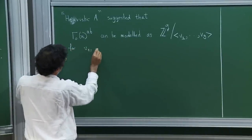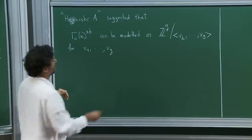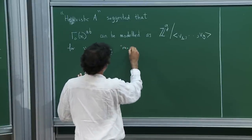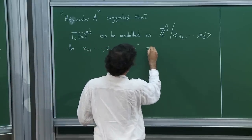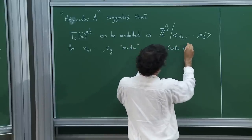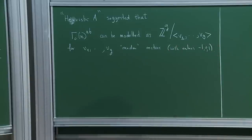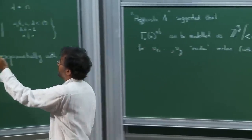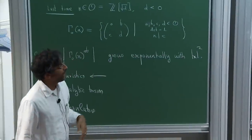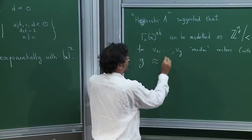The vectors v1 through vg are random vectors with entries, say, minus 1, 0, 1. This came from looking at how a presentation for this group coming from geometry might look like. Here g should be very roughly on the order of N squared.